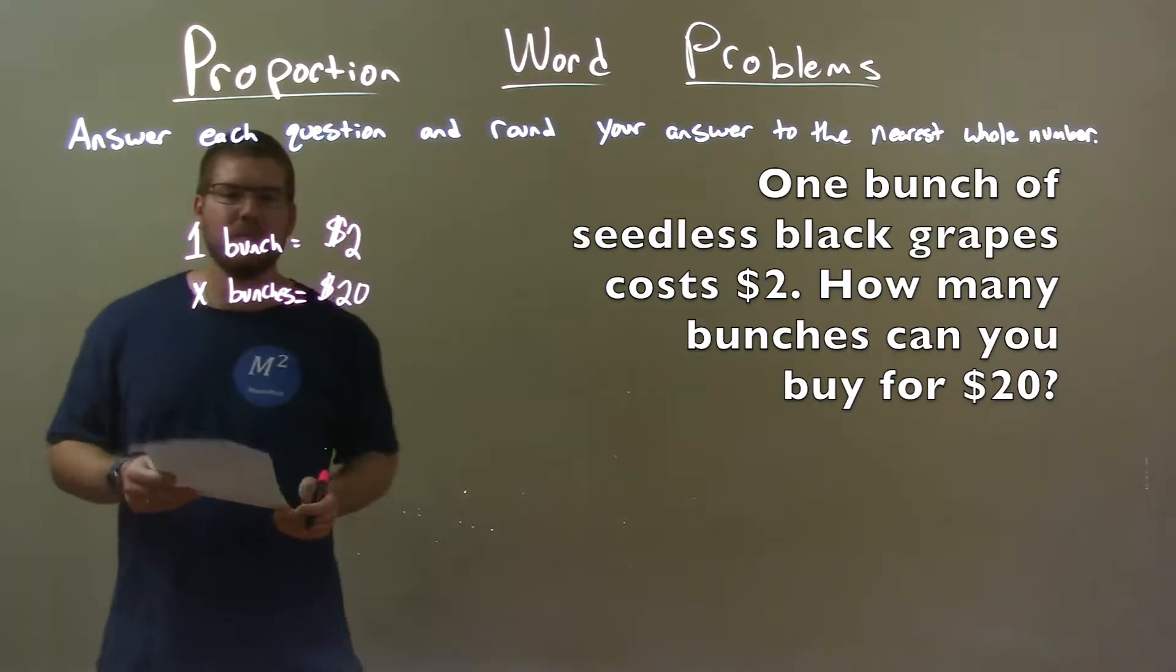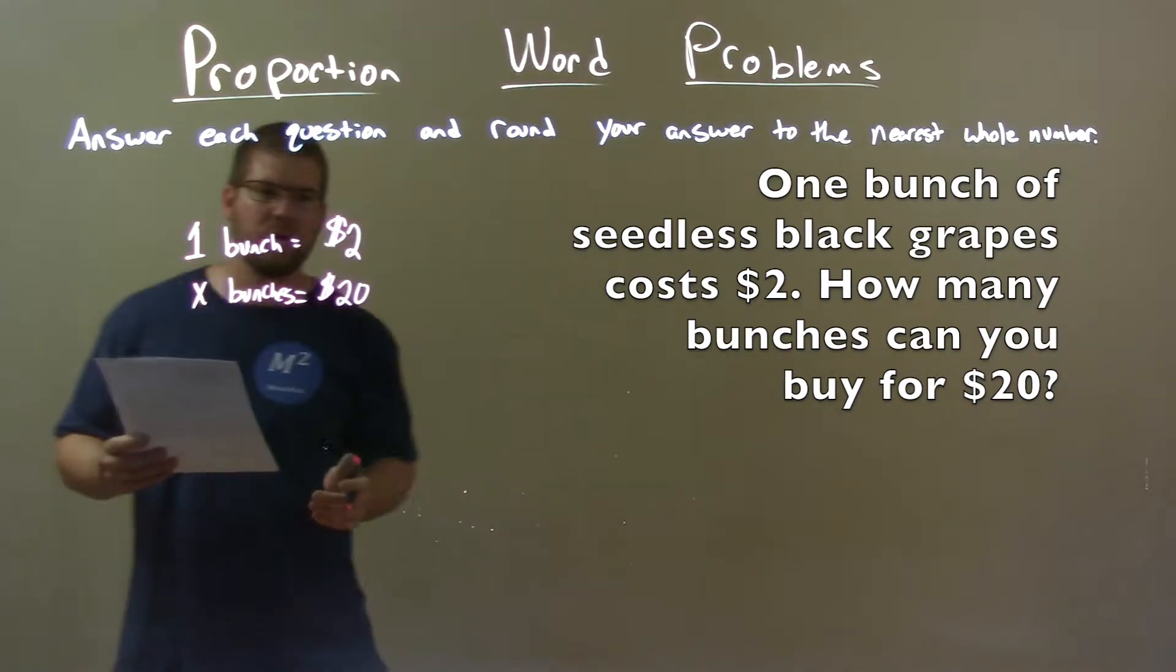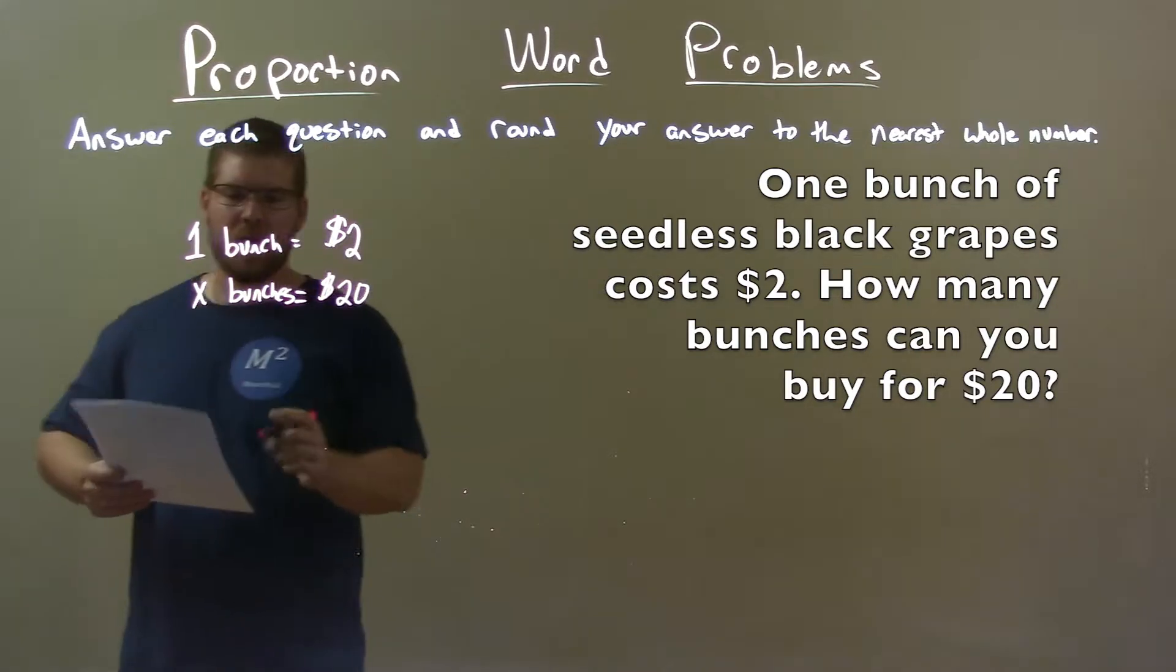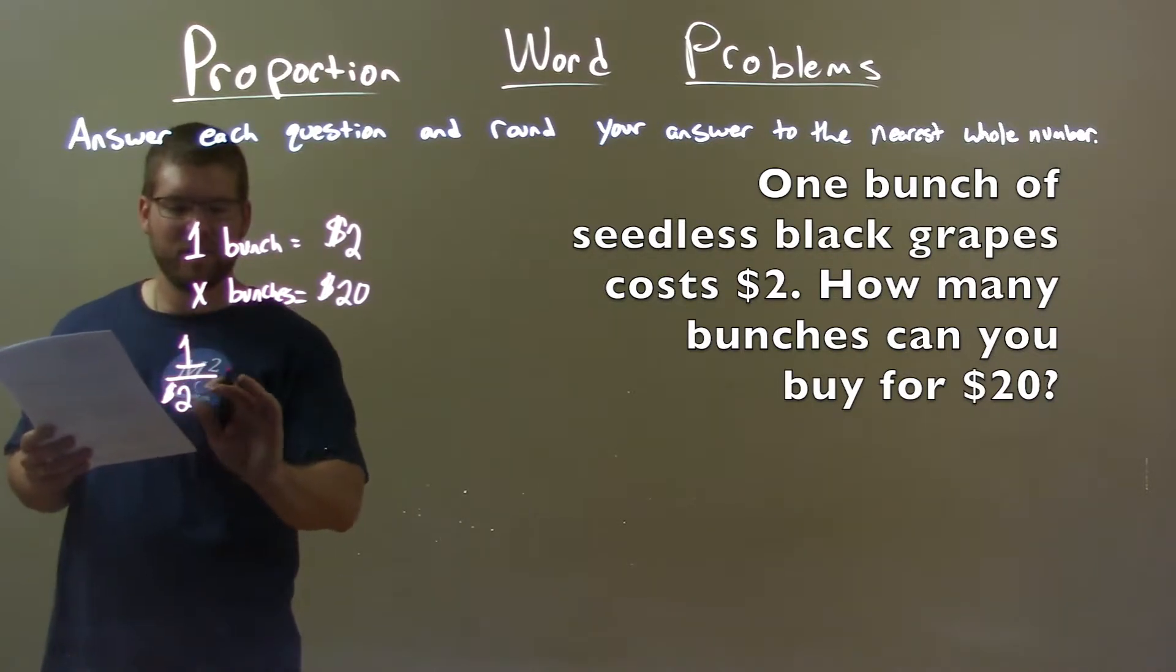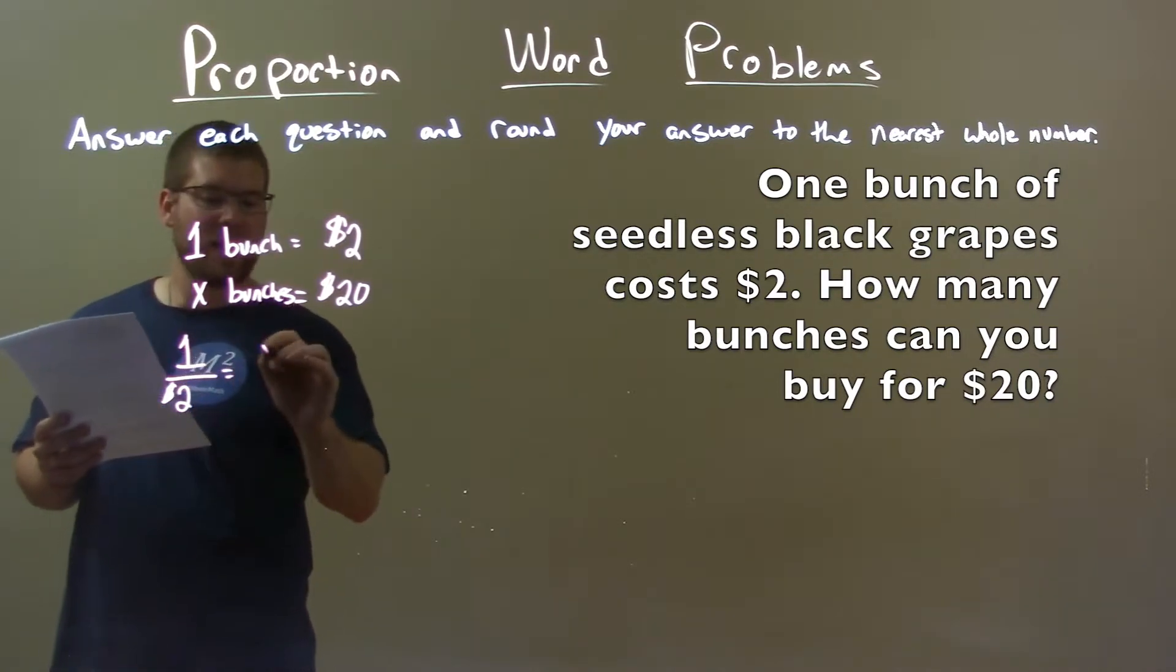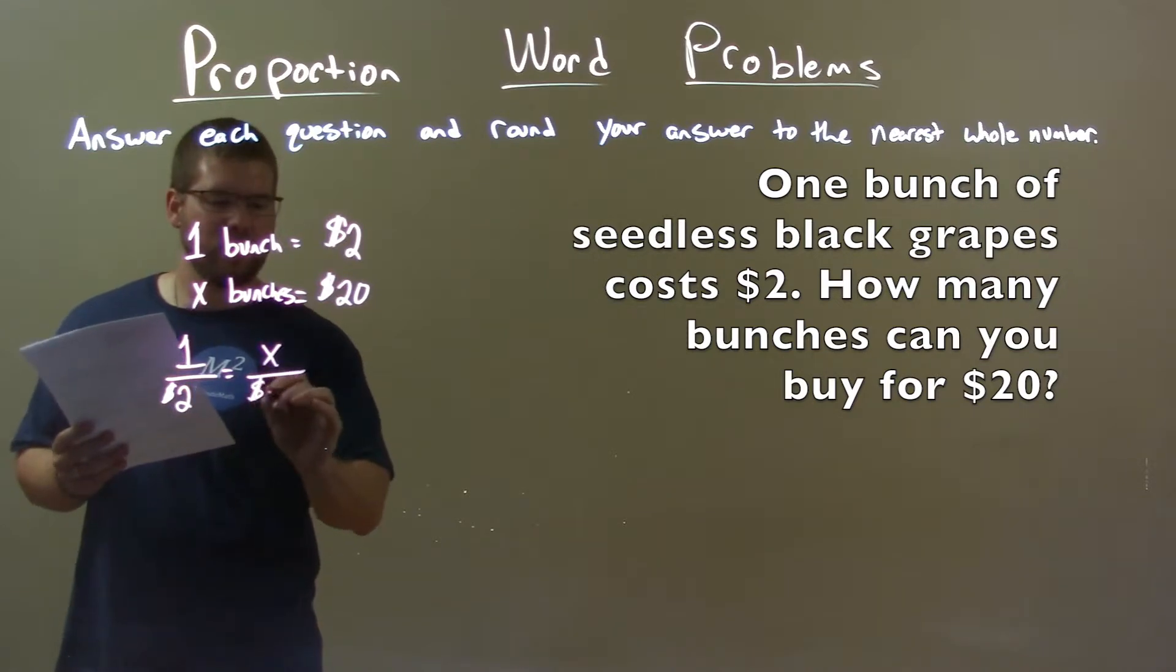How many bunches for $20? So let's set a proportion up. One bunch for every $2. Whoops, ignore that. Equals x bunches over $20.